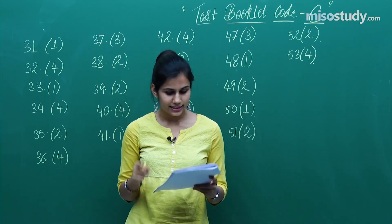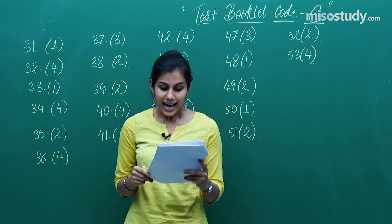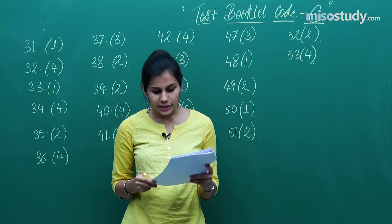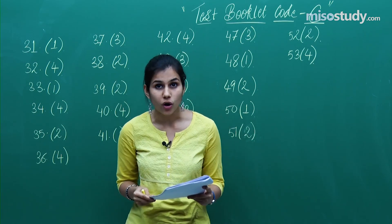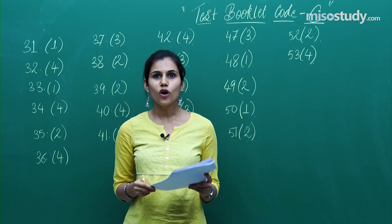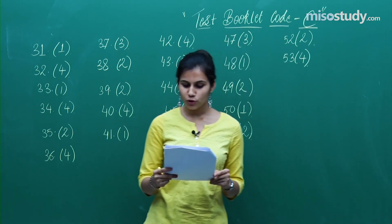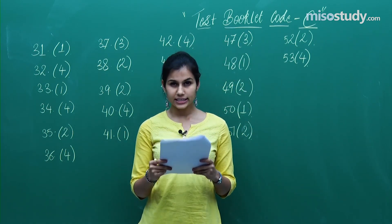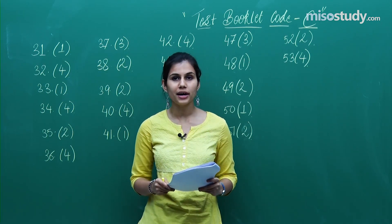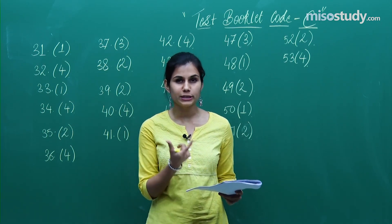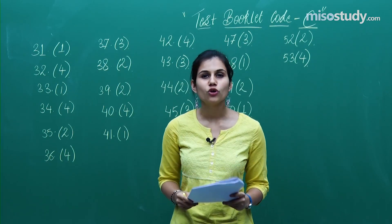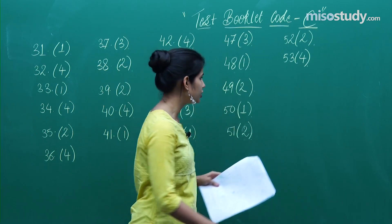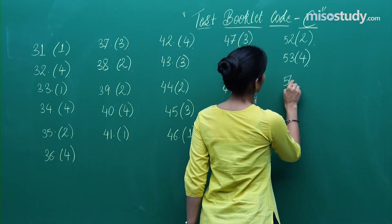Question 54: a determinant is given to you and you are asked to compute the value of the ordered pair (A, B). The answer is (-4, 5), which is the second option for question 54.